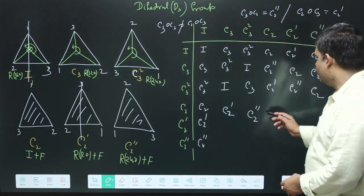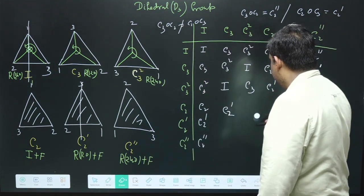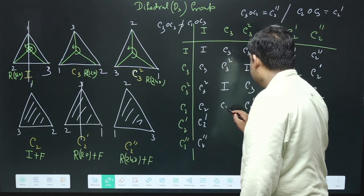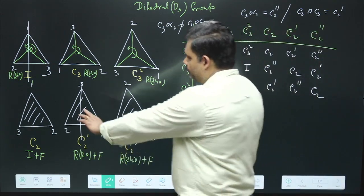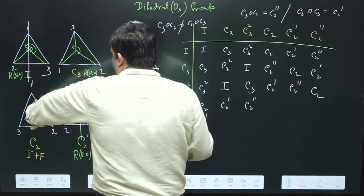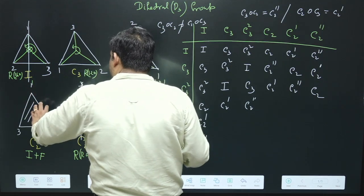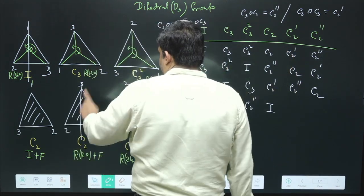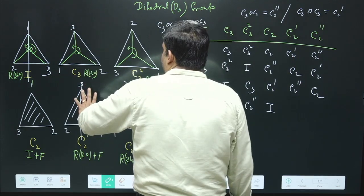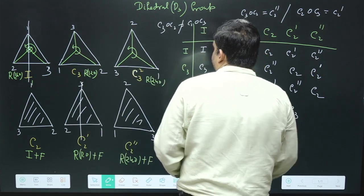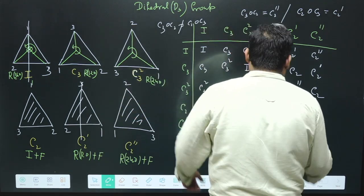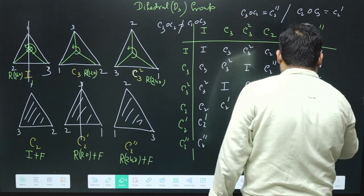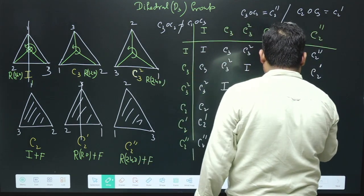Continuing the C2 column: the entry C2'' composed with C2 gives C2', and the entry C2' composed with C2 gives C3². For C2' composed with C3, rotating 120 degrees gives one configuration and then flipping gives identity. C2'' composed with C3 gives C2''.